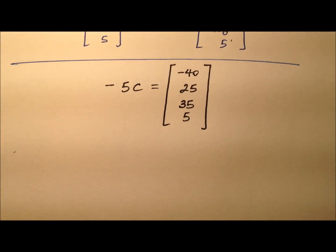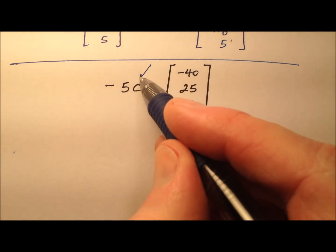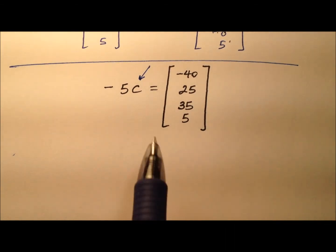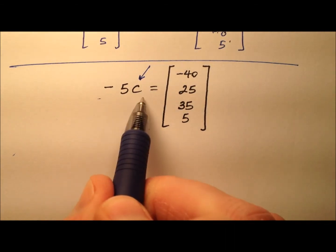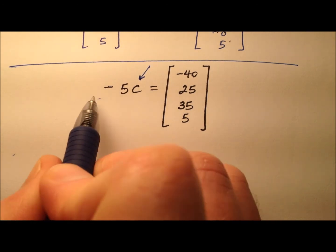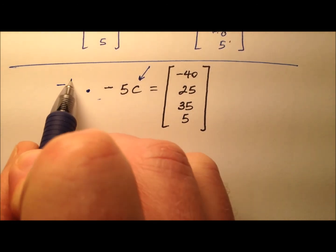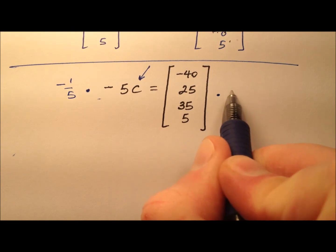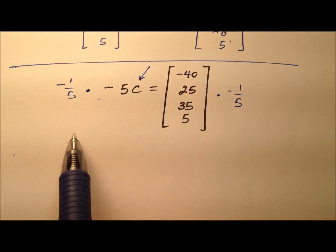To finish this up, in order to isolate this C variable all by itself, we need to divide both sides by negative 5, or another way to look at this, we need to multiply by negative 1 fifth.